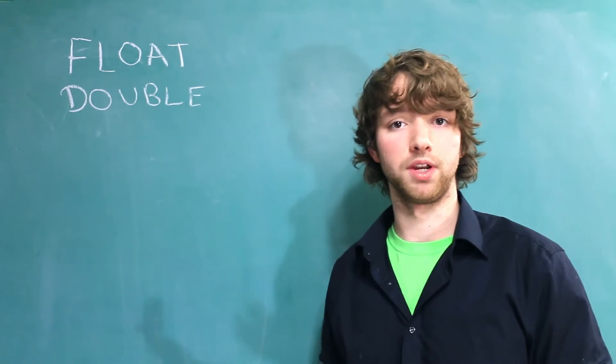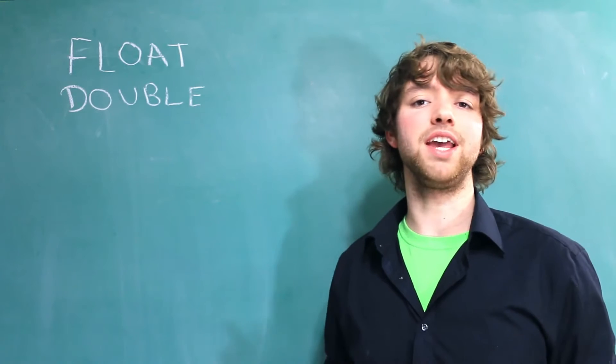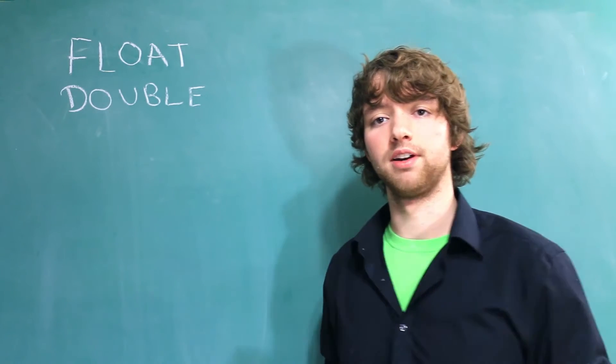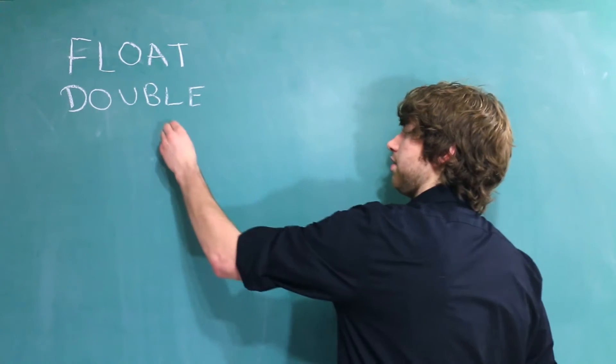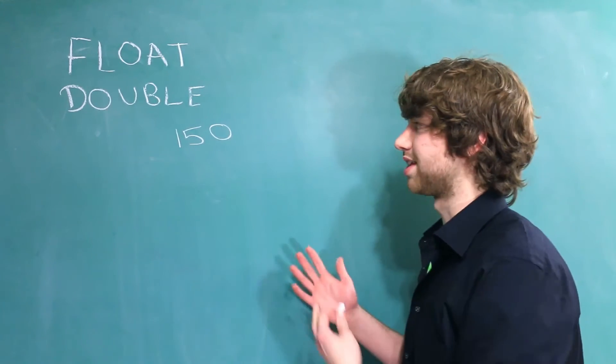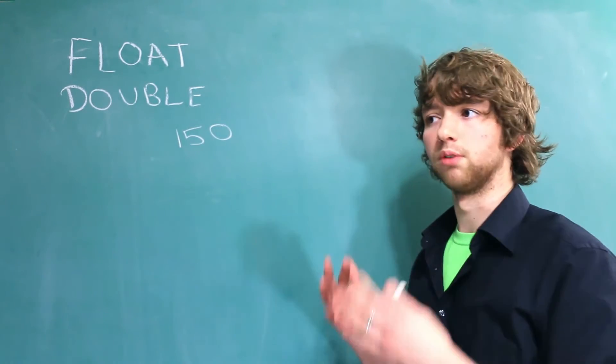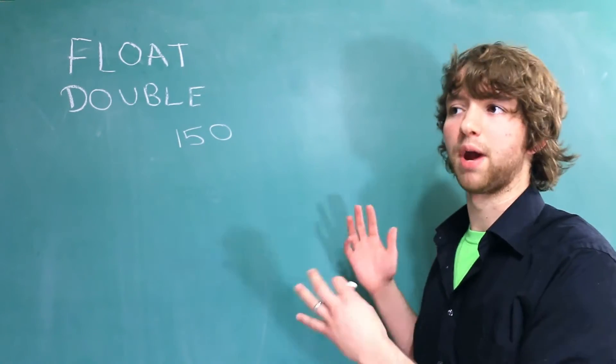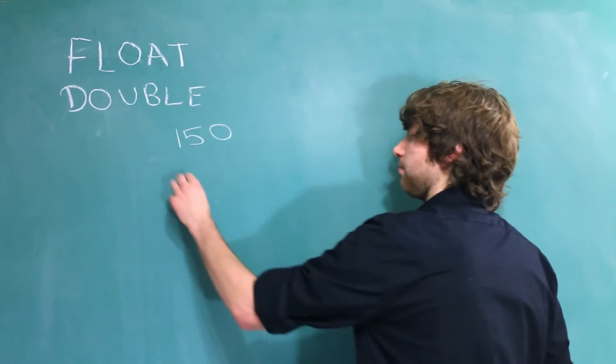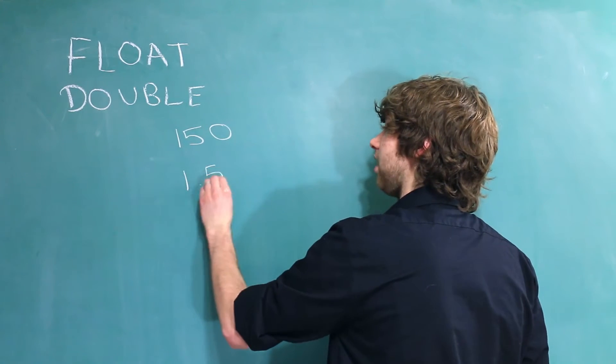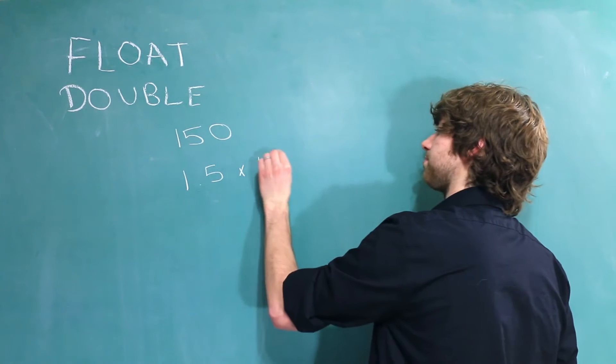Why exactly are they called floating point? It has to do with the fact that we can present a number in multiple different ways. For example, let's say we have the number 150. Another way we could present this number is some number multiplied by 10 to the power of something. So for example, 1.5 times 10 to the second power.